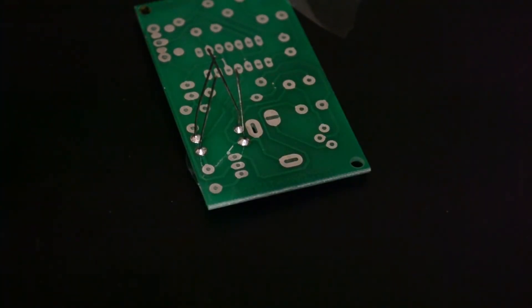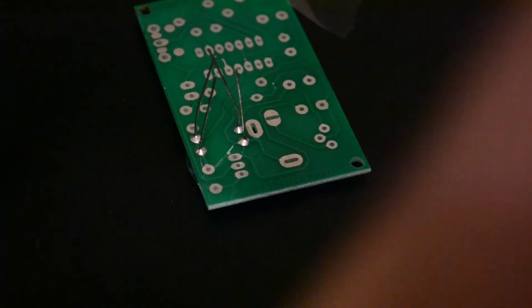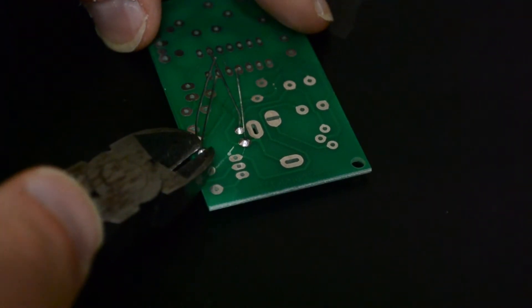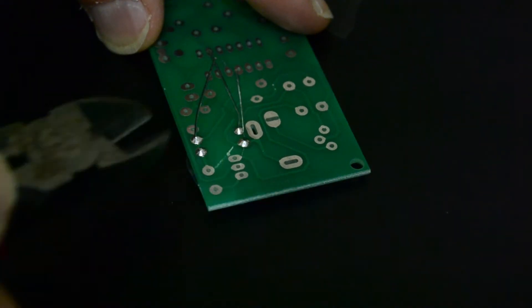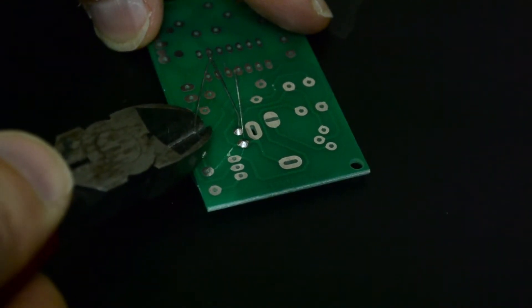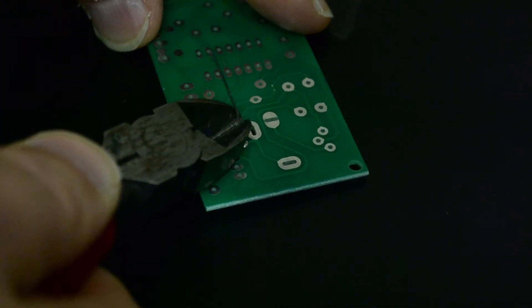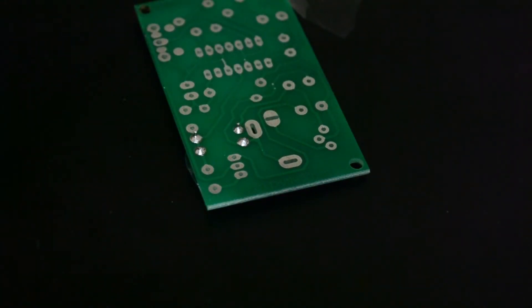There you go. It doesn't have to be on very long. And you can kind of see when it suddenly flows in and clings onto the pad like that. That's a very basic solder. Now, when you're done, we'll get rid of the solder iron. And now, we'll clip off the excess here. Because we don't need all these extra leads floating around. And there. We have our first two resistors soldered on. Nice, clean solder joints.